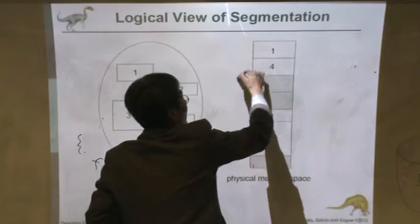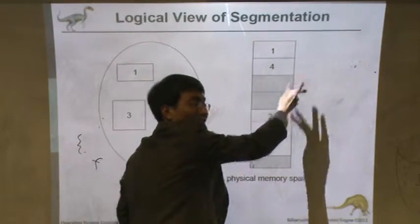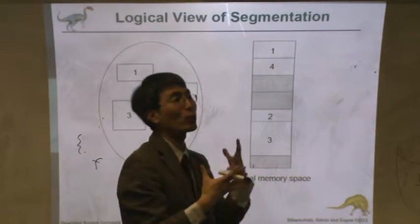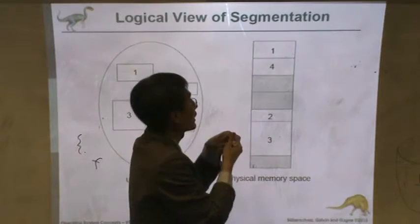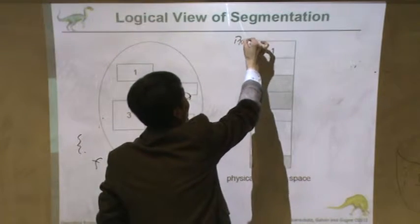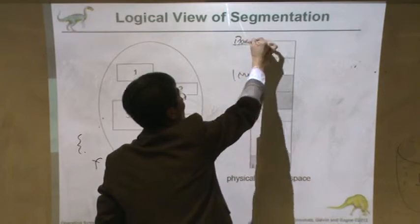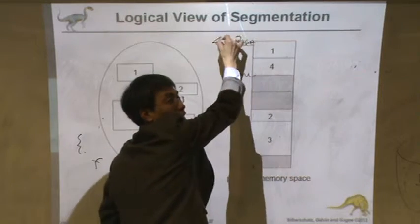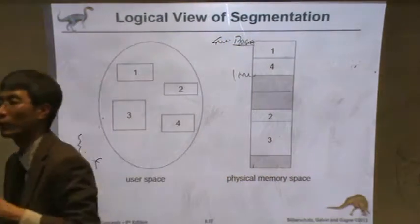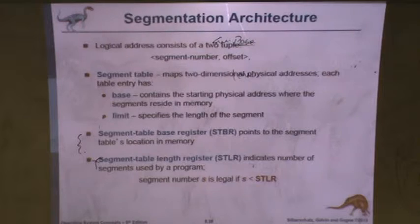Then consider this one is kind of the same process but logically. So they have this one base and limit, but this is not a process base, it's a segment. That is the reason we can use the different register, the segment table base register.